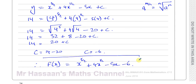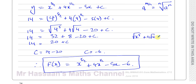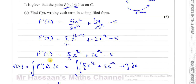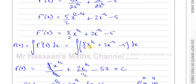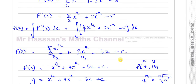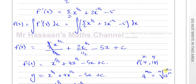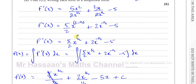That's the answer to part a. We can also write it as the square root of x to the power of 5, plus 4 times root x, minus 5x, minus 6 — both forms are fine. It's very important to find the value of c — a lot of students would stop at the general solution, but because they gave us a point on the curve, you must find what c is.